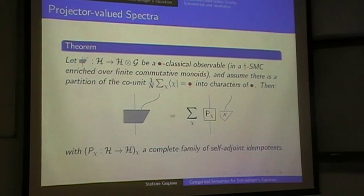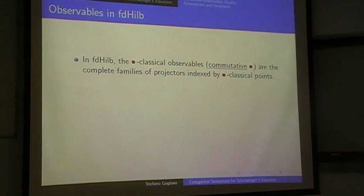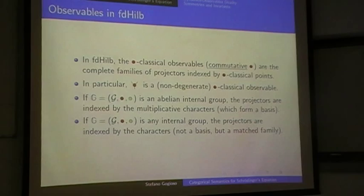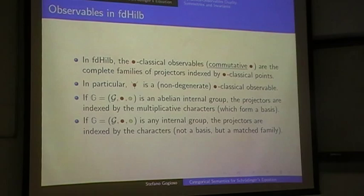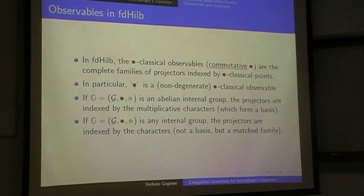It is just a sum — a complete family of self-adjoint, idempotent, orthogonal maps indexed by characters — which is exactly what you get in Hilbert space as an observable. In FD-Hilb for the abelian case they correspond to observables indexed by classical points, and for the non-abelian case they still correspond to observables, but indexed by characters, which don't form a basis in the non-abelian case. But the theory still holds through if you only consider the characters.